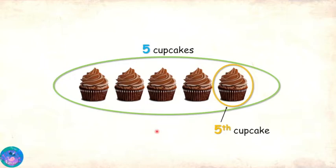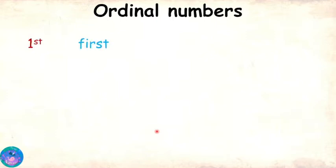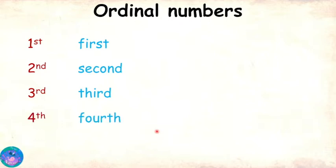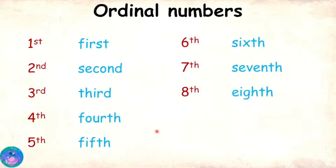You've got it! Now let's see the first ten ordinal numbers. They are first, second, third, fourth, fifth, sixth, seventh, eighth, ninth and tenth.